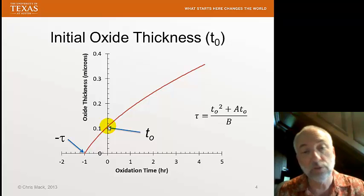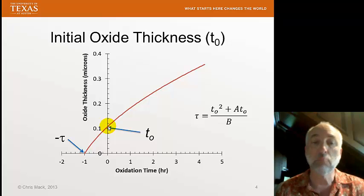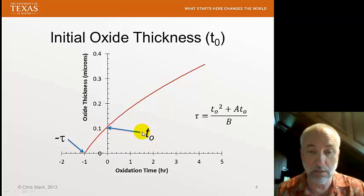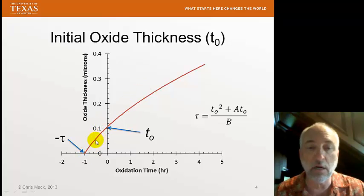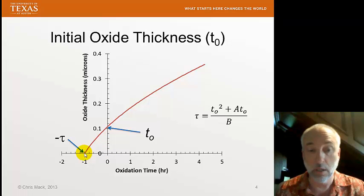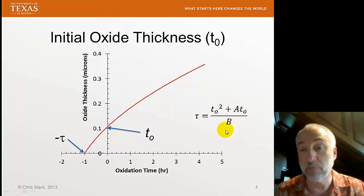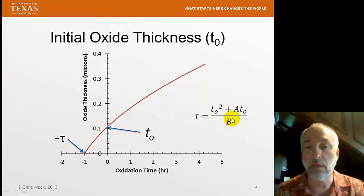This is equivalent to shifting the time axis — that is, it's equivalent to beginning the oxidation at a time of minus tau, letting it run until it reaches the initial thickness T0, and then continuing from there. So I could think of the process as beginning oxidation at minus one hour, letting it run for an hour to reach T0, and then continuing on. Tau is calculated from a formula that is a function of both A and B, and therefore has all the temperature, pressure, and other dependencies that A and B have.